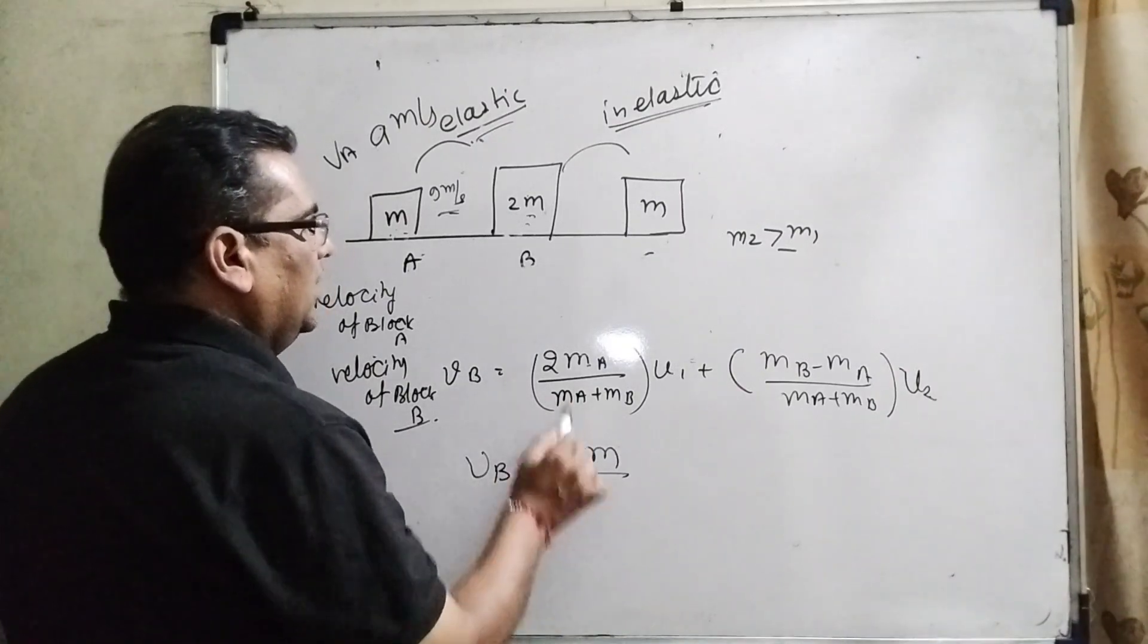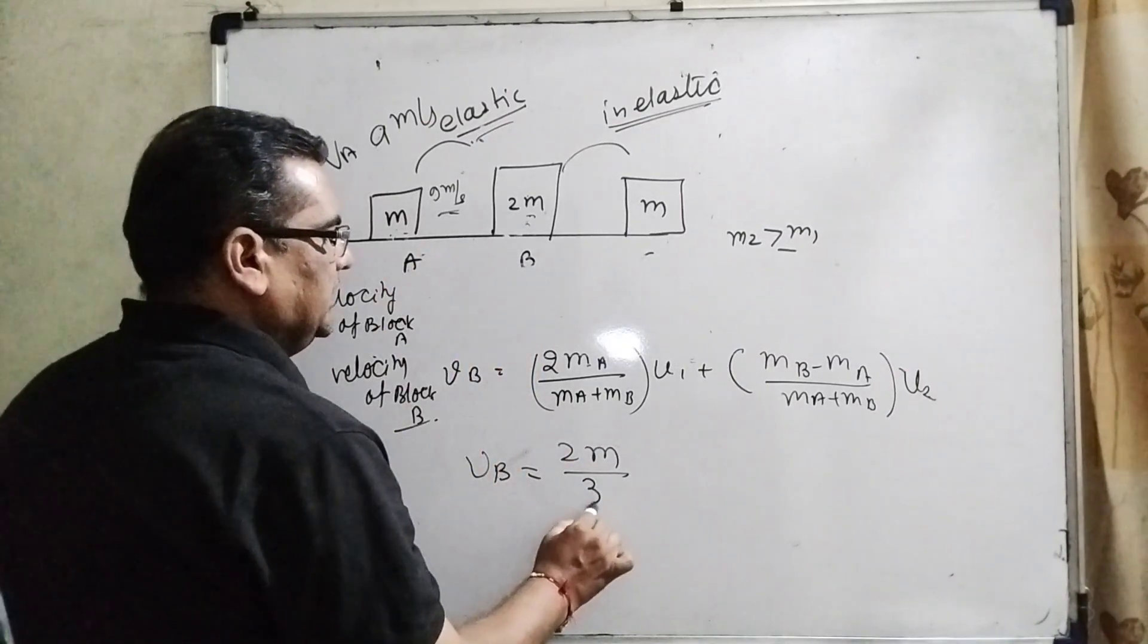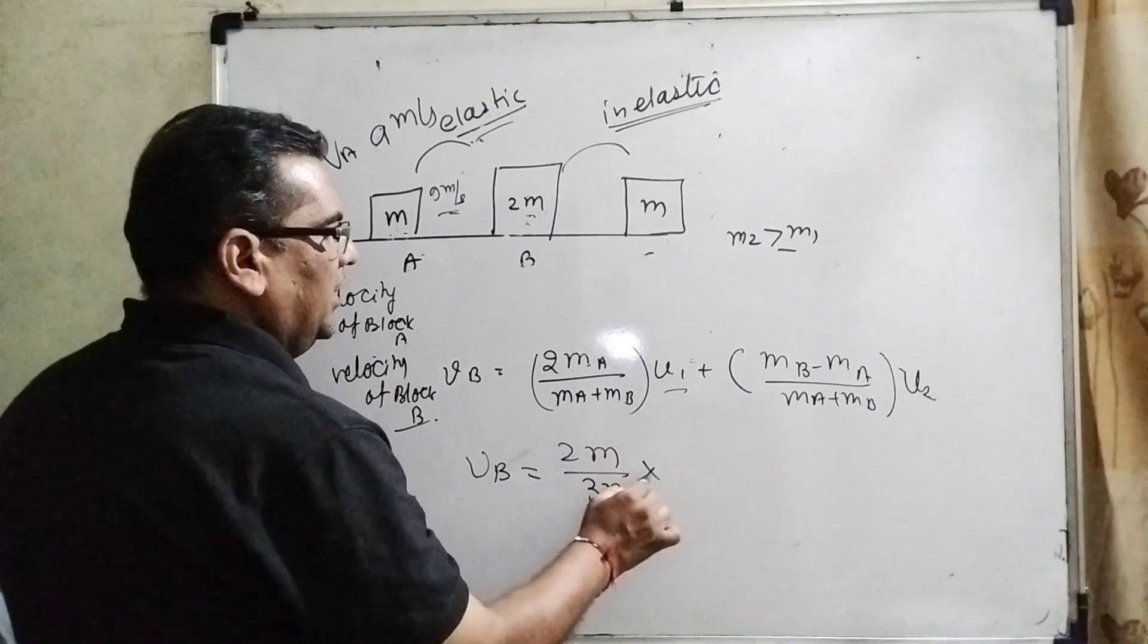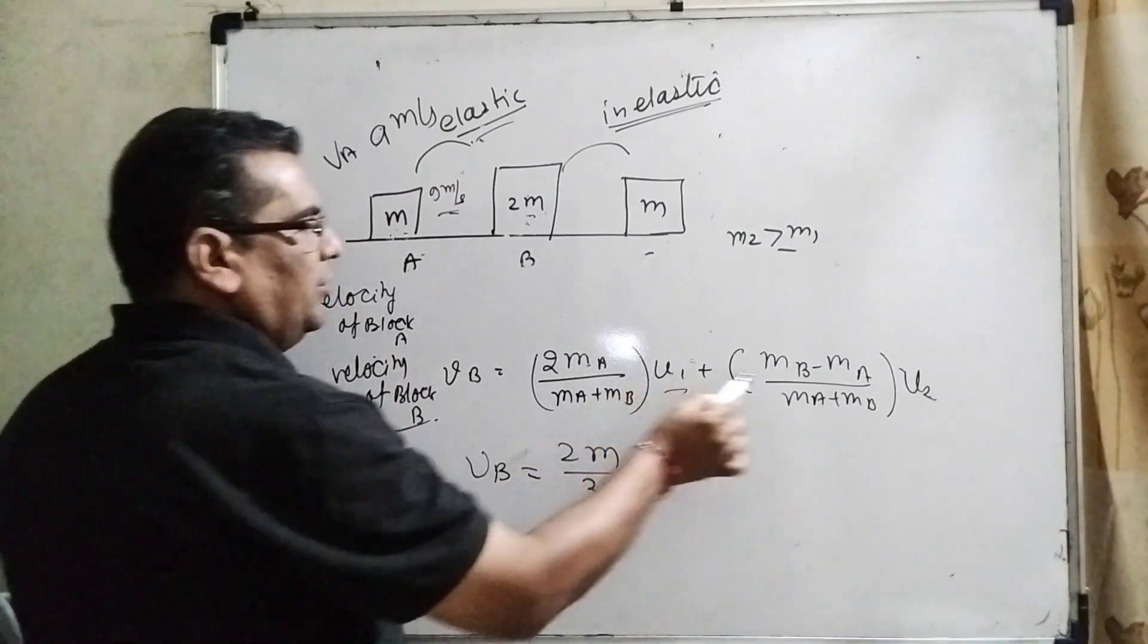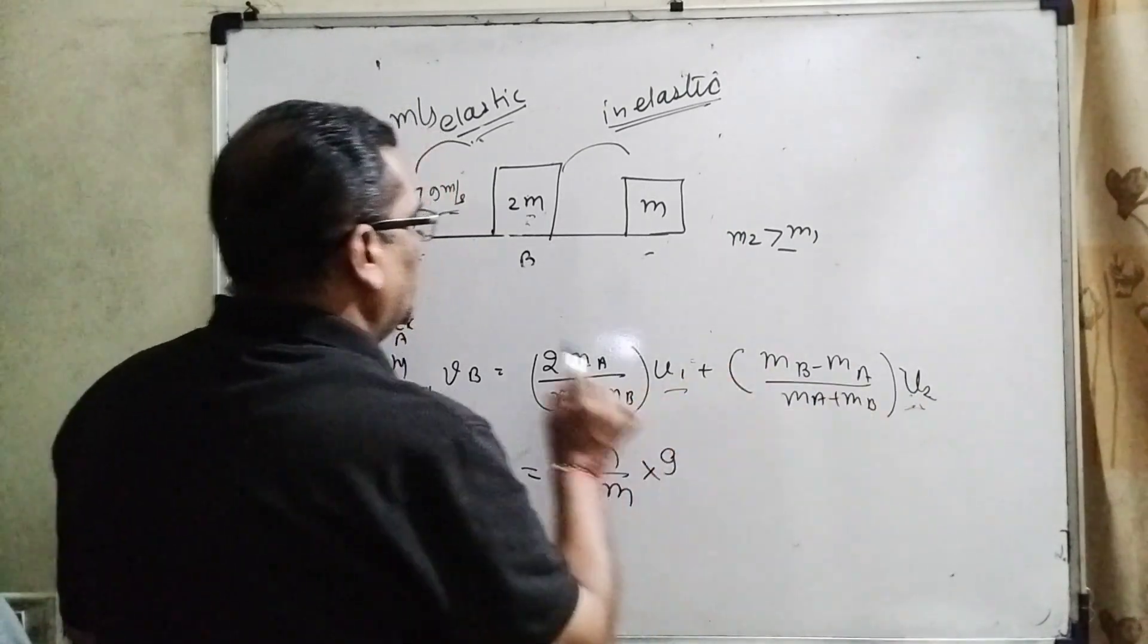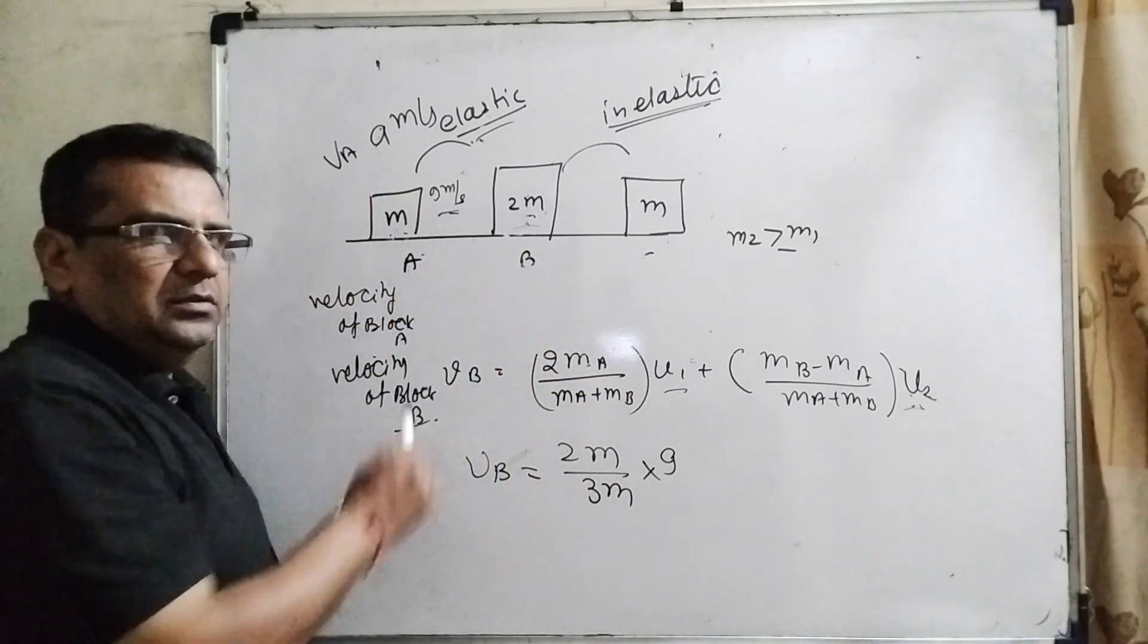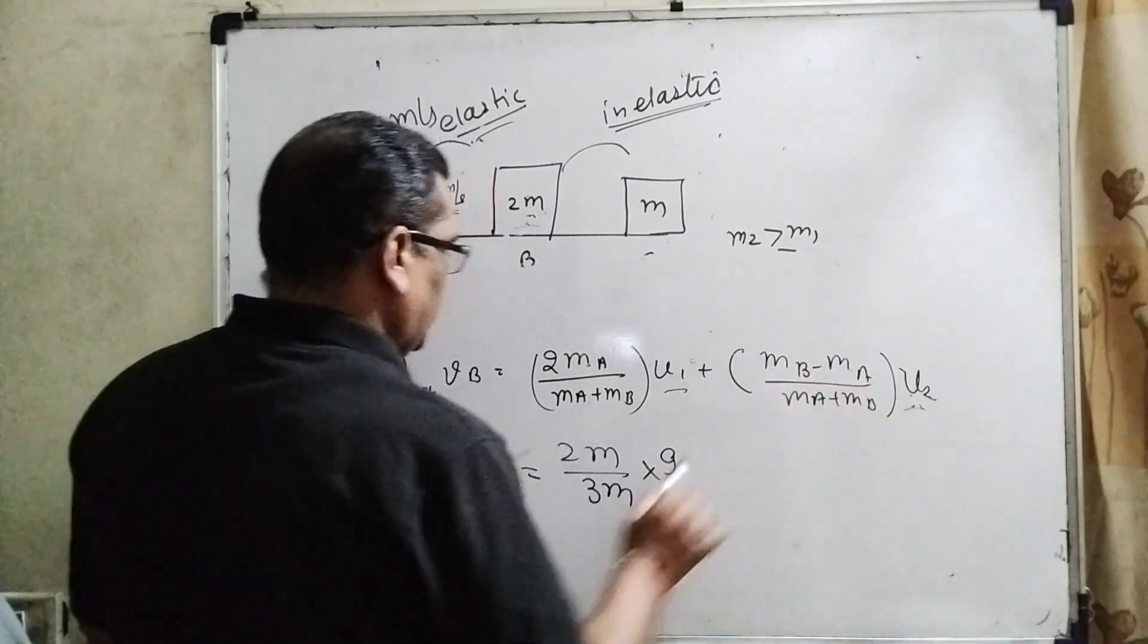Mass is given - M, 2M and M - total 3M. And here it is given 9. And you can see that before collision U2, U2 means the velocity before collision is 0. So therefore, whole value becomes 0. Its velocity is given.